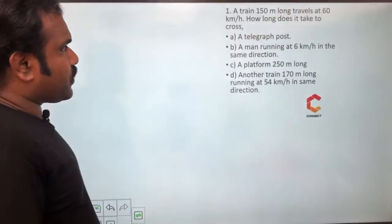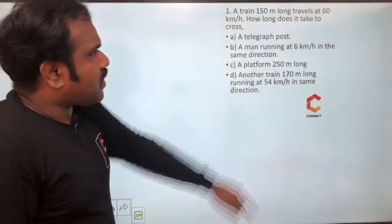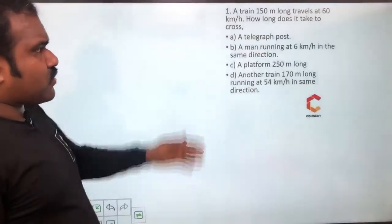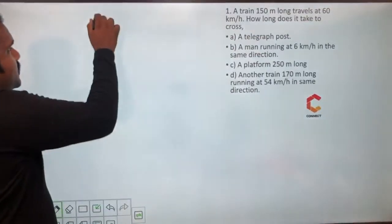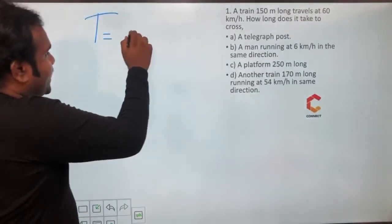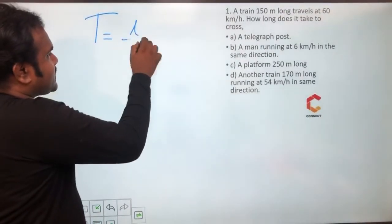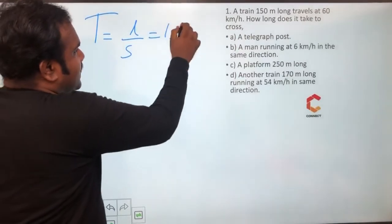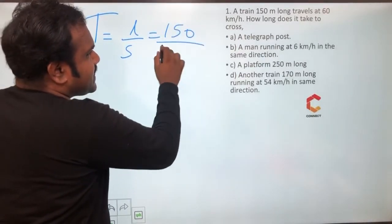The first problem for you guys is, a train 150 meter long travels at 60 km per hour. How long does it take to cross a telegraph post? So time taken is equal to, telegraph post means case number 1, right? So length of the train, L by S. So length of the train, distance is the length of the train 150 by speed is 60.